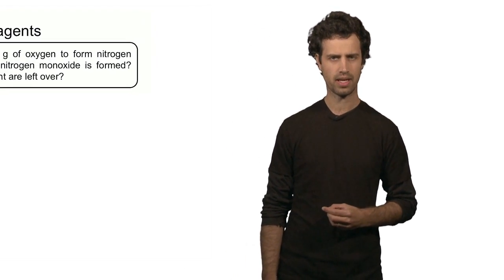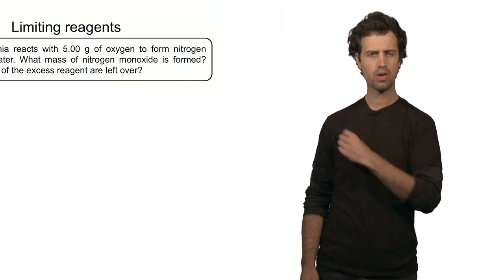We know that in a chemical reaction there can be a limiting reagent, and this limiting reagent defines the amount of product that we can form. It also defines how much of the excess reagent has reacted, and how much of the excess reagent is left after the reaction. That's a quantity we'd like to calculate in the following example.